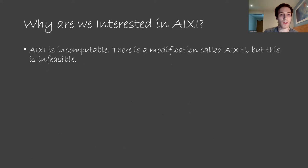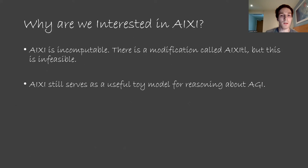So why are we interested in ICSI at all? ICSI is incomputable, so can't exist in the real world. There is a modification called ICSI-TL, but this is infeasible. Despite these things, ICSI is a powerful toy model for reasoning about artificial general intelligence. An ICSI agent could be applied to any problem, really. And so if an ICSI agent has some problem with it that could be a concern for humans, then it seems likely this could pop up in the super-intelligent machines we might have in the future. So it gives us a way to reason about super-intelligent systems without actually having access to any.